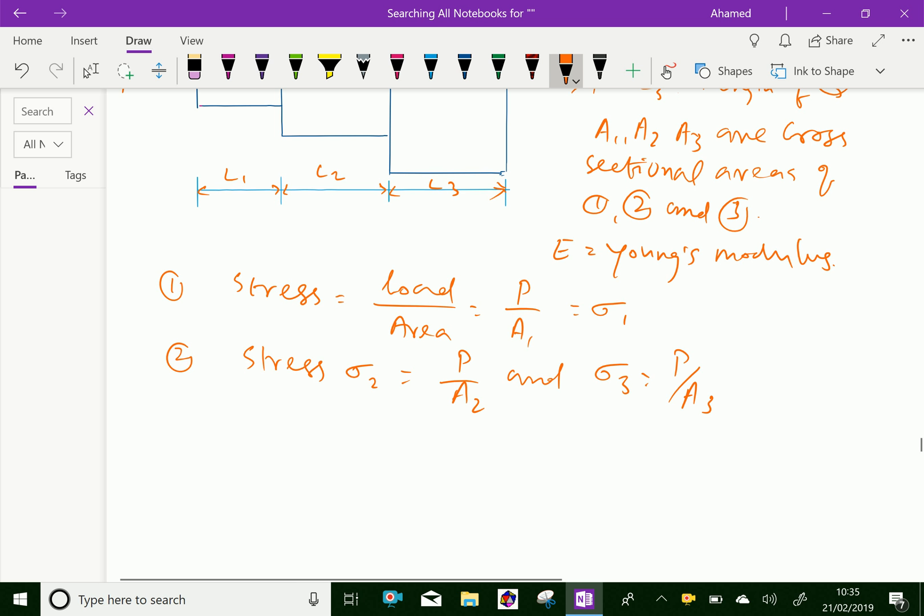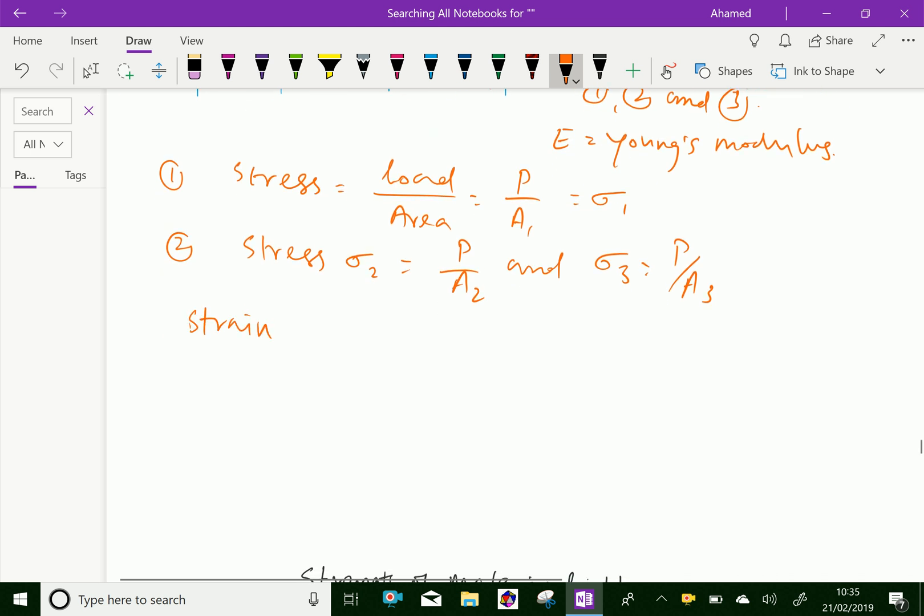Now let's find strain. Strain in section 1, 2, and 3 are E1, E2, and E3 respectively. Therefore, E1 equals sigma 1 by E, that is equal to P by A1E. Like that, E2 equals P over A2E and E3 equals P over A3E.